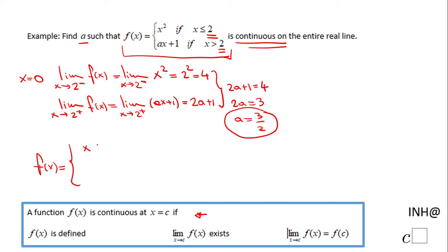So let me write that function: x squared if x less than or equal to 2, and 3/2 x plus 1 if x greater than 2. If you use the definition of a limit, you'll notice this function here is continuous at 2.